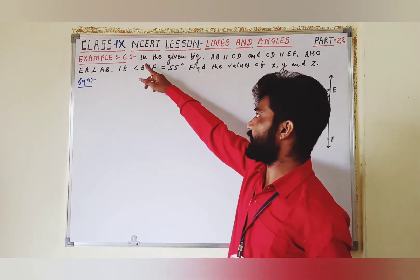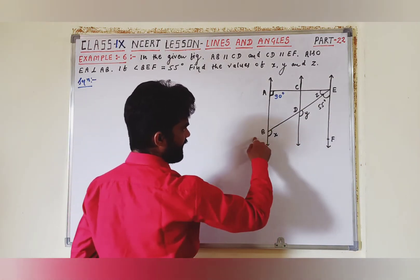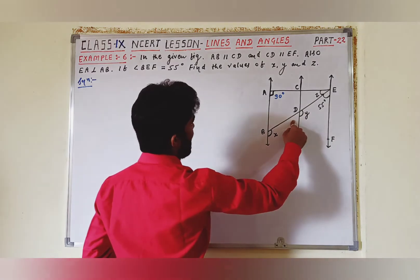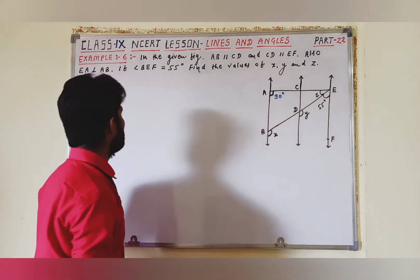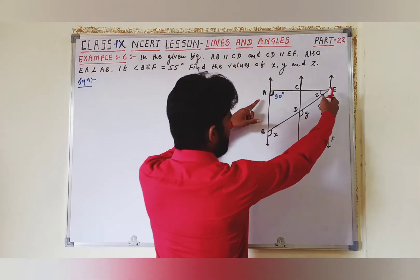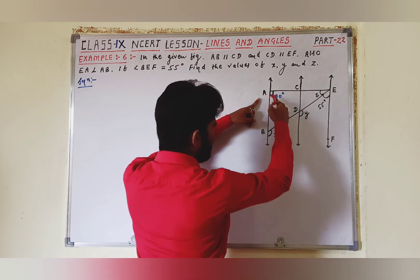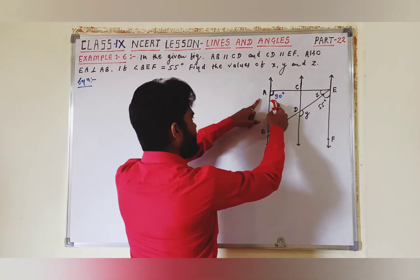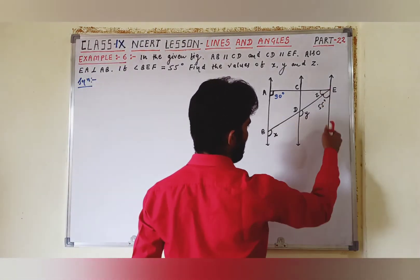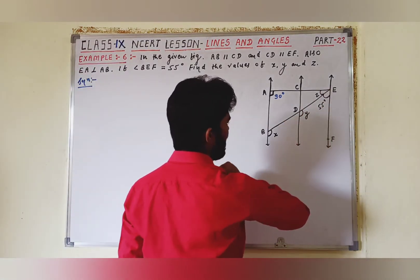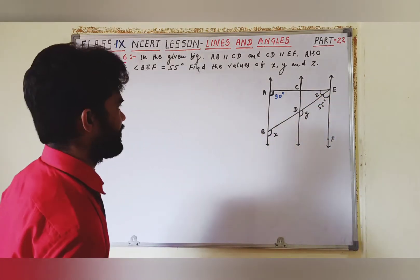See the question. In the given figure, AB parallel to CD and CD parallel to EF. Also, EA perpendicular to AB. If angle BEF = 55 degrees, find the value of X, Y, and Z.